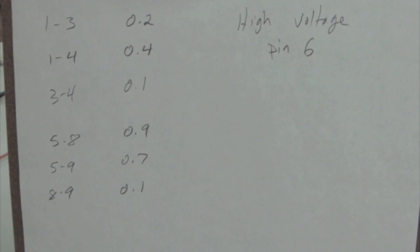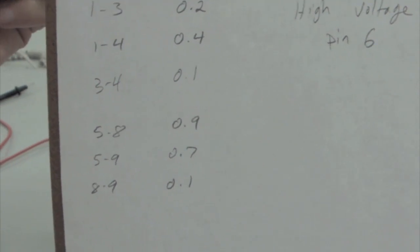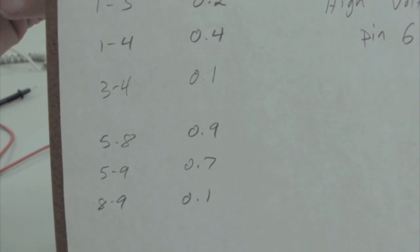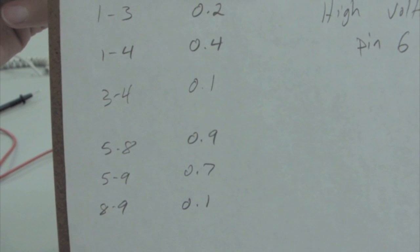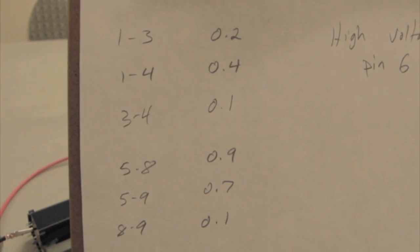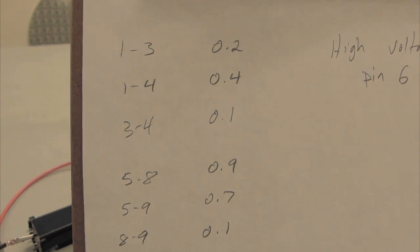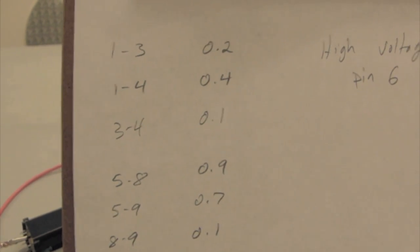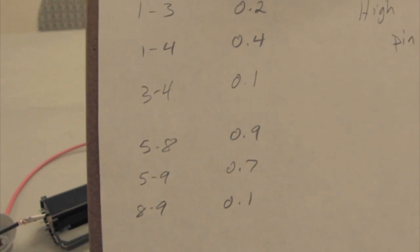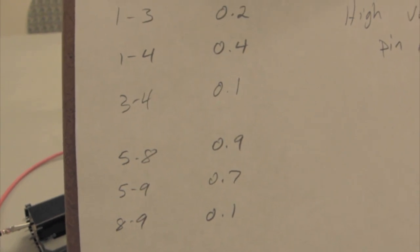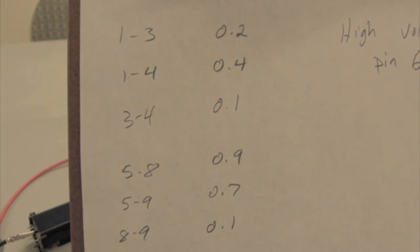We know that pin 6 is the high voltage out, and based on this chart, I'm going to guess that pins 5 and 8 are the power in. Pins 5 and 9 would probably work too, but I think we might get a little more voltage out of pin 6 if we hook it up to pins 5 and 8. Notice that pins 5 and 8 are the highest resistance on the chart.